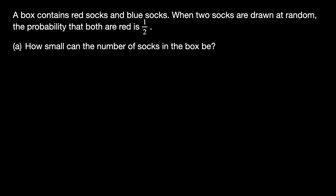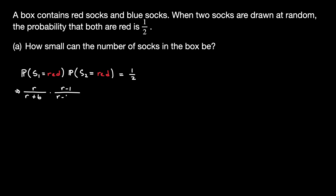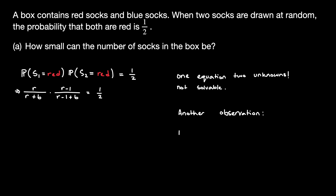Let's generalize this problem to find a solution. We set the probability that sock 1 is red and sock 2 is red equal to one half, and we know the formulae for both of these probabilities. We note that we have only one equation but two unknowns — the number of red socks and the number of blue socks. This by itself is not enough information to solve the problem. However, we can make another observation to find a second equation.